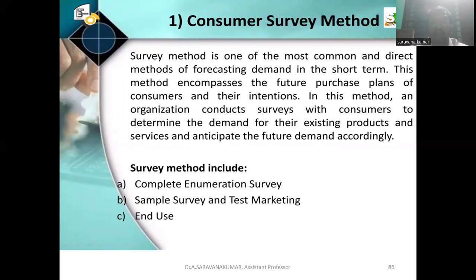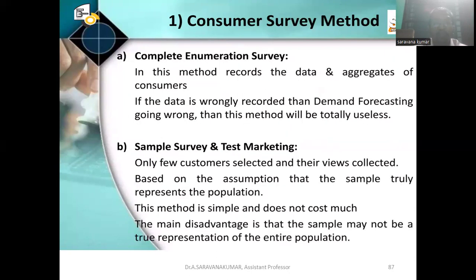The survey method includes complete enumeration survey, sample survey, test marketing, and end use. In the complete enumeration method, data is recorded and aggregated across all consumers. If the data is wrongly recorded, the demand forecasting will go wrong and this method will be totally useless.